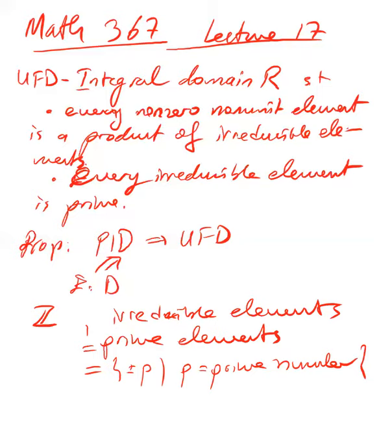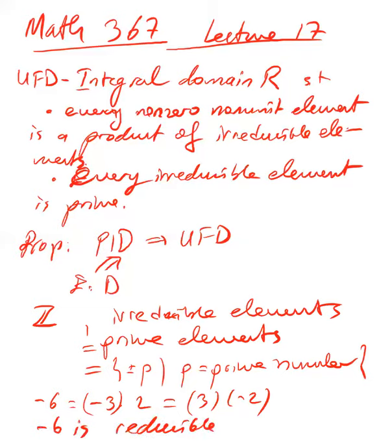For example, in ℤ, minus 6 can be written as minus 3 times 2, or 3 times minus 2, so it's a product of two non-unit elements. Therefore minus 6 is reducible, and we know that 6 is not a prime number.